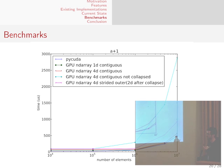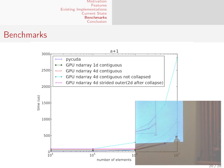Here are some benchmarks. The blue line at the bottom represents PyCUDA kernels doing A+1 — a small kernel to measure baseline overhead. On a contiguous kernel — whether 1D or 4D collapsed back to 1D — the red and green lines are very close to the PyCUDA baseline. If you have a 4D tensor without collapsing, doing full 4D indexing computation, the overhead shoots up dramatically, as shown by the line at the top. With a 4D tensor that has one strided dimension, it collapses to 2D, giving the purple line in the middle — still some overhead, but significantly faster than no collapsing.